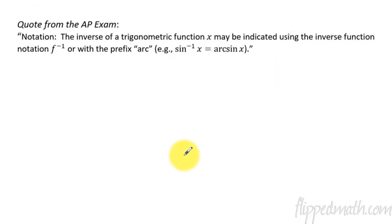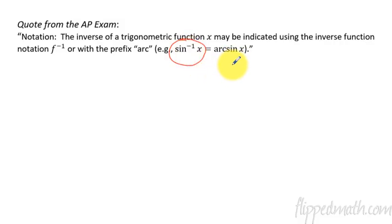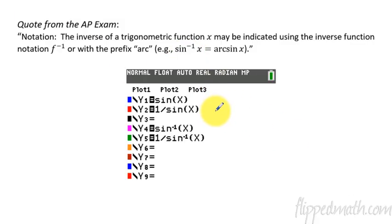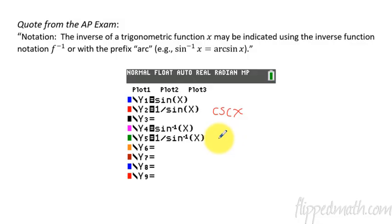Here is something you'll see right on the front page of an AP exam. When talking about trig functions and we want to discuss the inverse of a trig function, it could be written as sine inverse of x or as arcsine — these are interchangeable. So if you see arcsine or arctangent, it just means the inverse function of sine or tangent. Don't get confused on the calculator: sine of x is regular trig, 1 over sine is cosecant, and sine inverse is the inverse of sine — not 1 over sine. And 1 over sine inverse would be the reciprocal, which is cosecant of x.